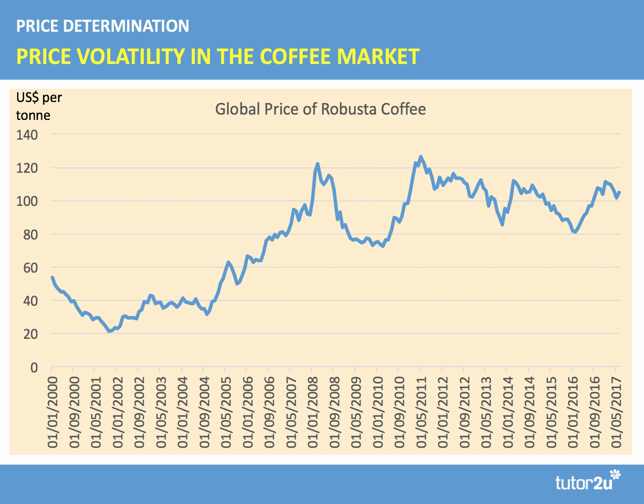So there are two fundamental causes of price volatility: outward shifts of supply and demand. We can see this in the coffee market. Coffee is grown in more than 60 countries and, by value of trade, is the second most traded commodity in the world after oil. Nearly 25 million families worldwide depend on coffee for a living. The price of robusta coffee has been relatively volatile — particularly in the early 2000s, falling below $20 per tonne before shooting up to more than $120 per tonne in 2008.